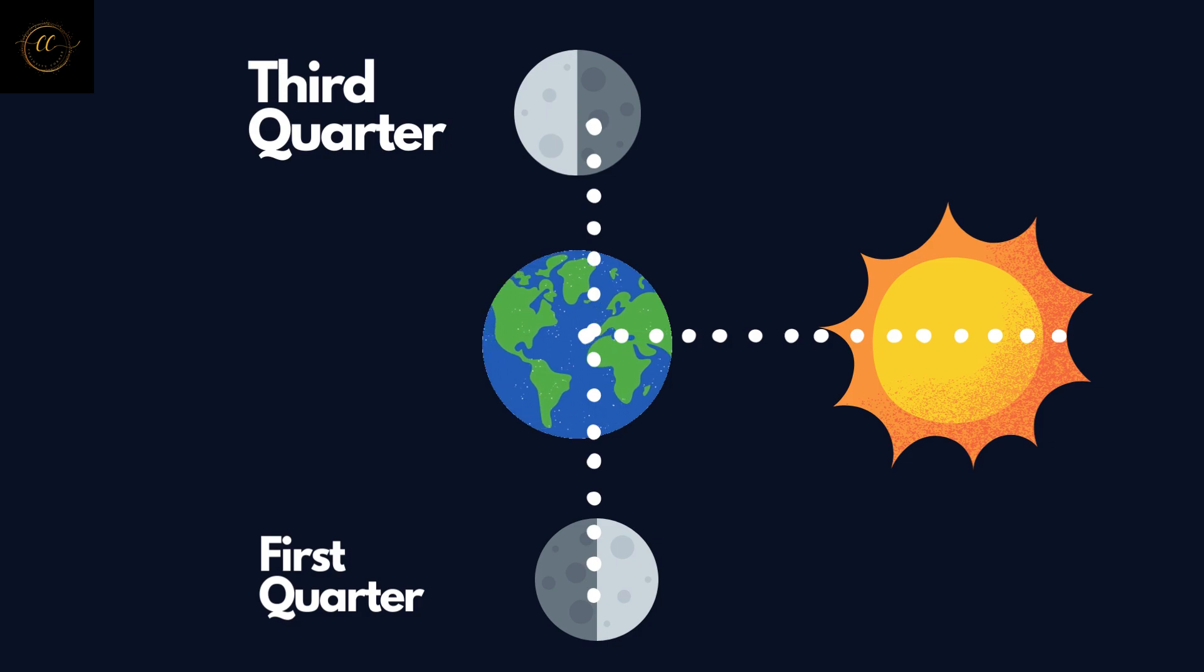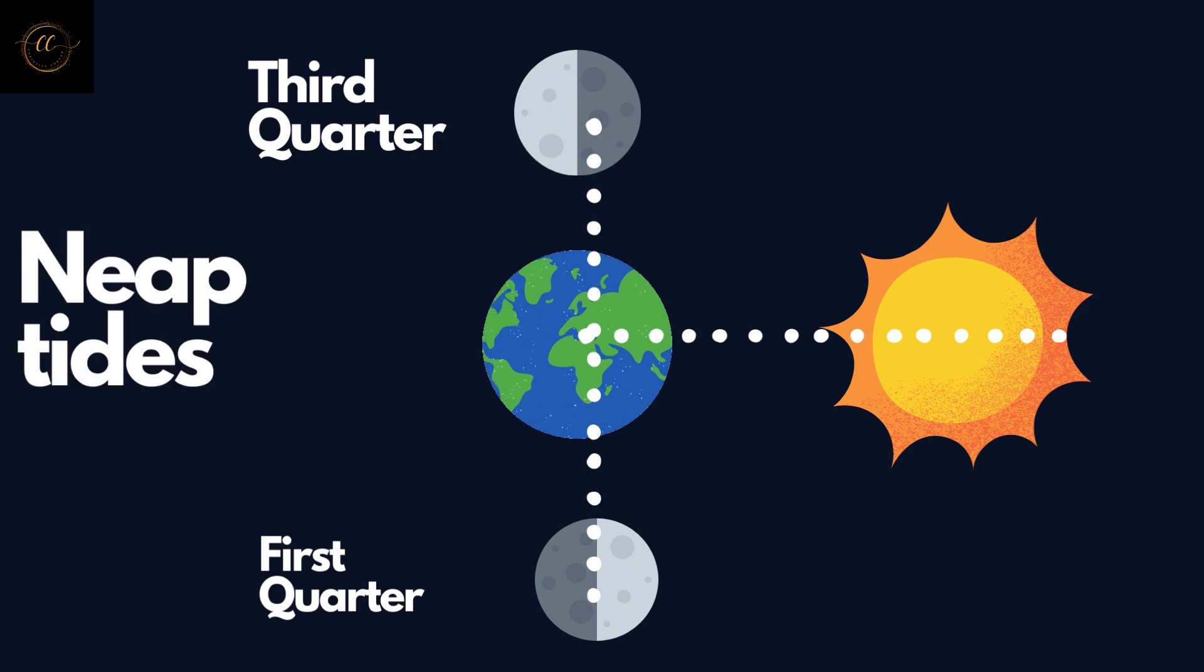Conversely, when the gravitational forces of the sun and the moon are perpendicular to each other, during first quarter and last quarter moon phases, their combined effect leads to lower high tides, known as neap tides.